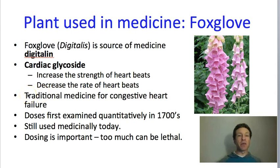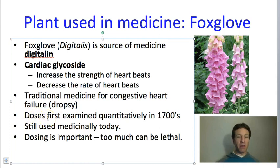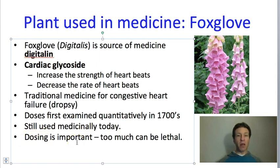Digitalin is traditionally used for congestive heart failure — back when it was first developed in the 1700s, this disease would have been called dropsy. This was the first drug where doses were quantitatively examined, happening in the mid-1700s by a doctor who was a contemporary and competitor with Charles Darwin's grandfather. We still use this today, and there are various drugs that have this as the main ingredient. Dosing is important — too much Digitalin could cause heart problems, and not having enough could also be lethal. This means that if you have congestive heart problems, you should not be self-medicating.